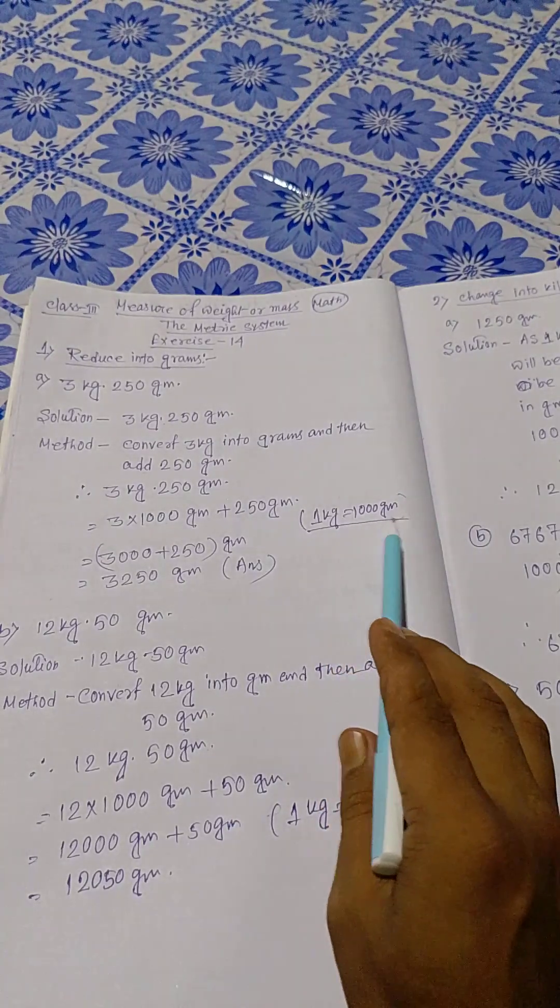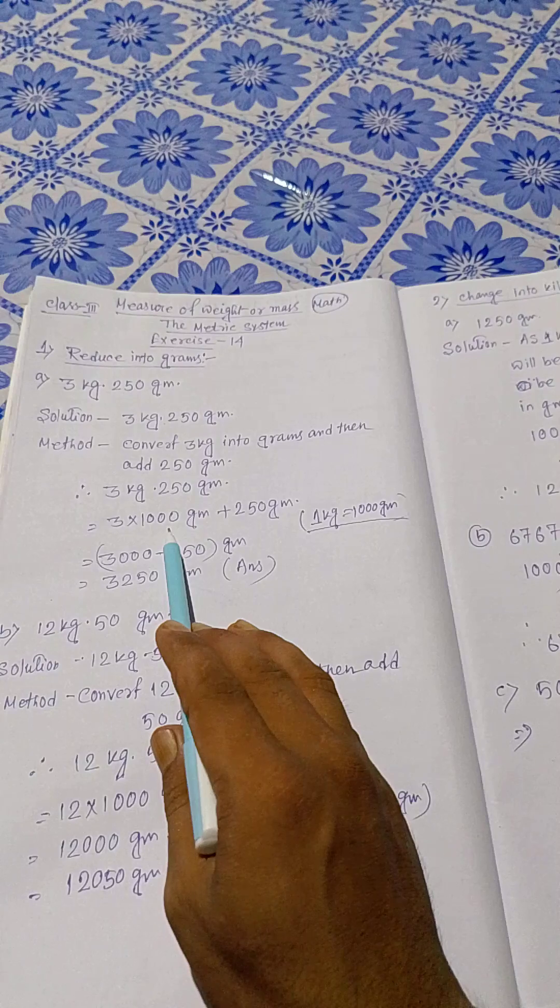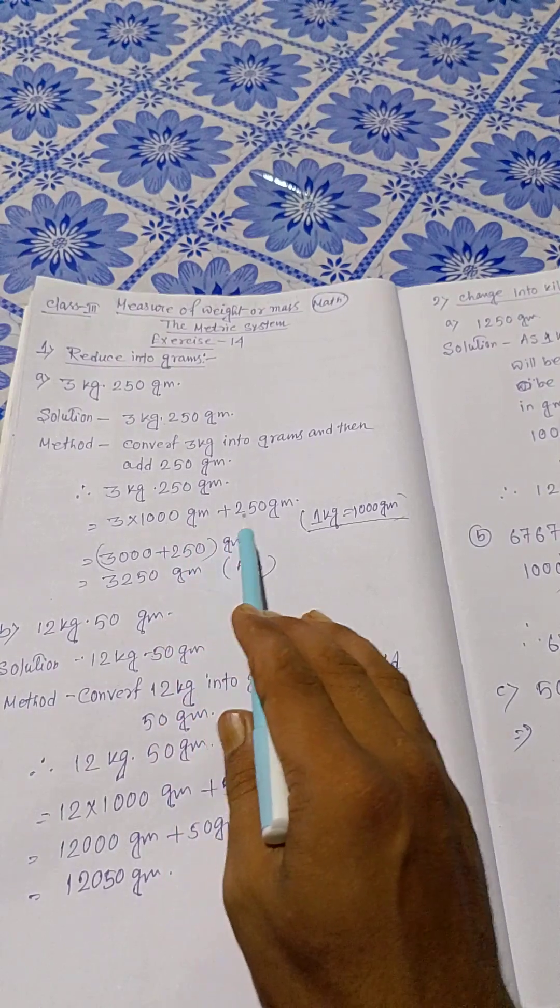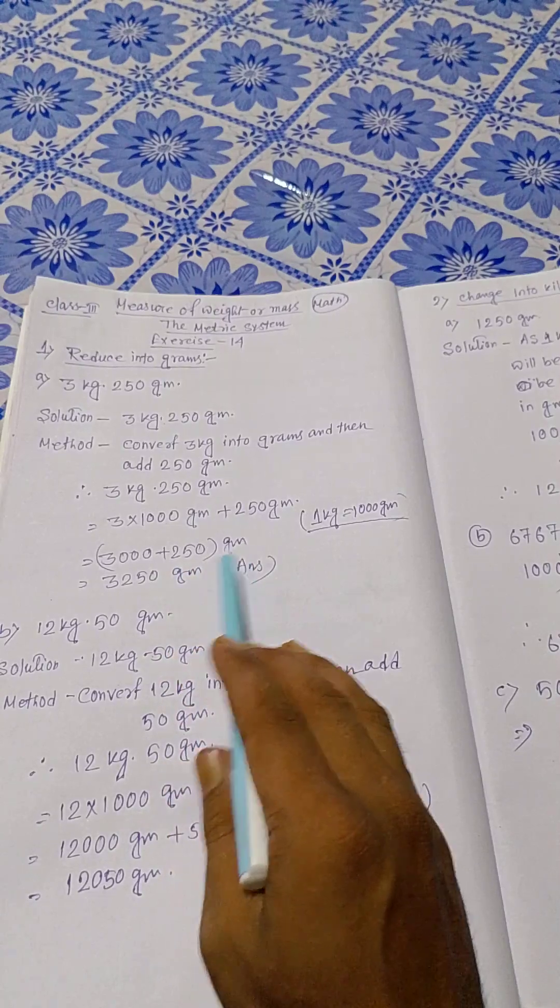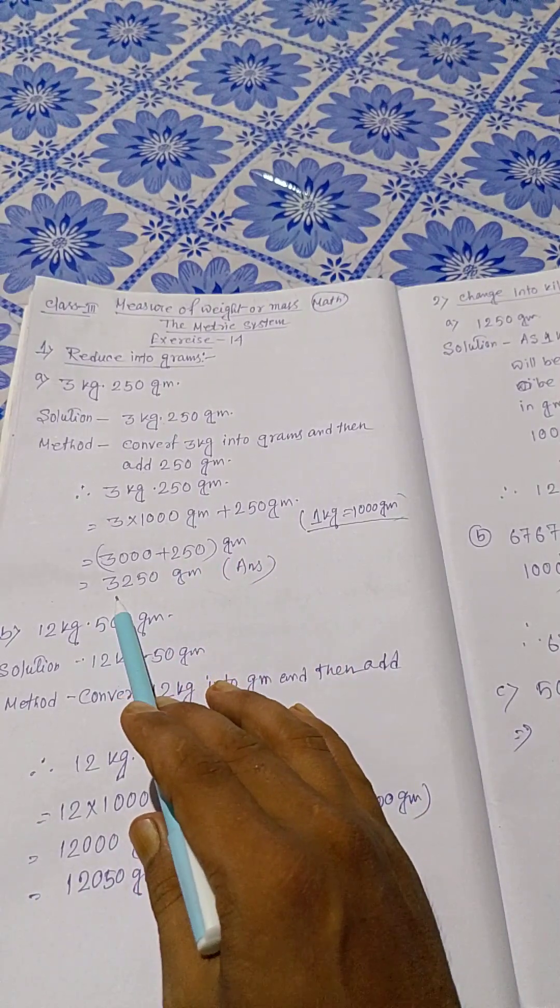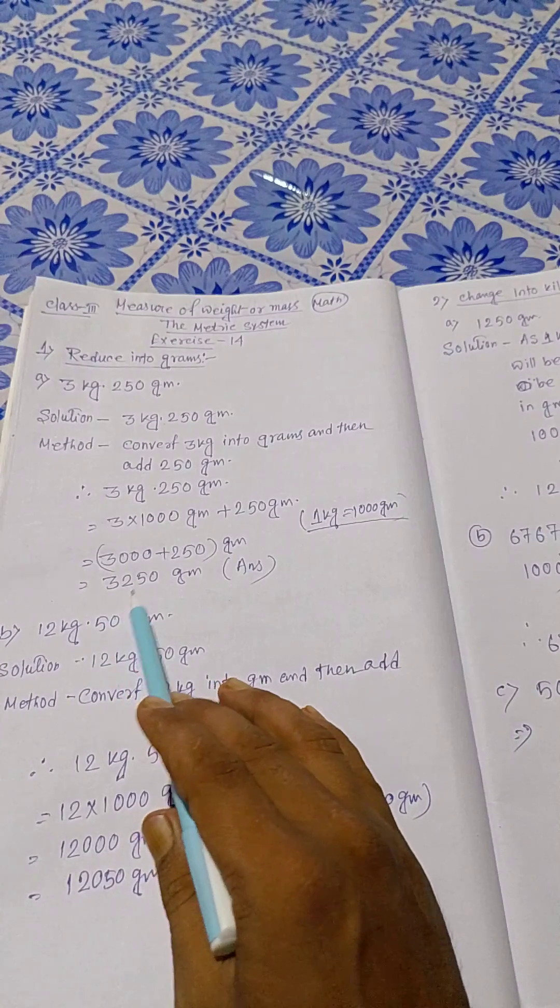3 times 1000 grams plus 250 grams equals 3000 plus 250 grams equals 3250 grams. Answer.